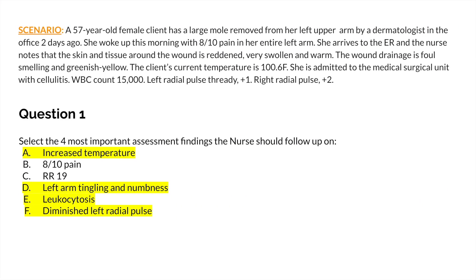Let's go to the answers. For question one, we want to follow up on the increased temperature — 100.6, with anything above 100.4 considered a fever. Left arm tingling and numbness, which we'll explain more shortly. Leukocytosis, which is an elevated white blood cell count and an indication of infection. And the diminished left radial pulse, along with the left arm tingling and numbness — we'll get to why that's important.